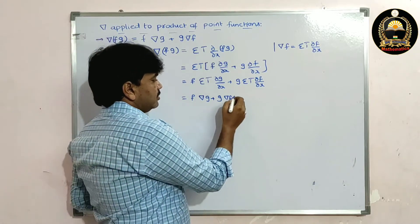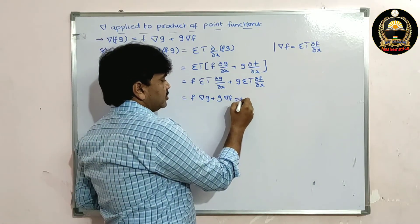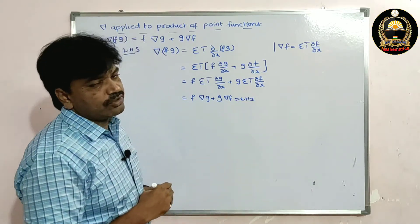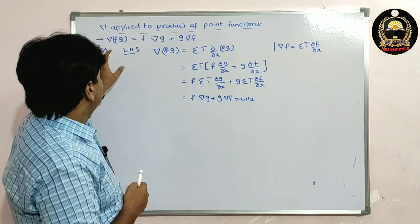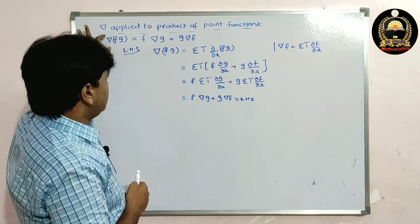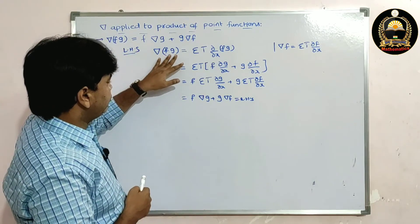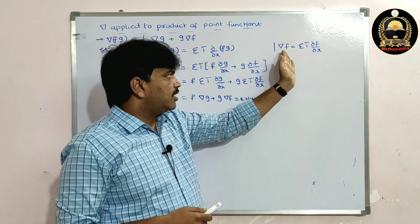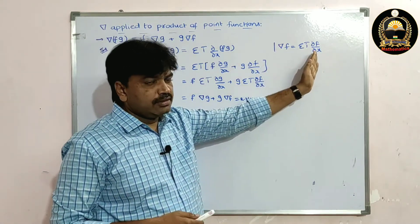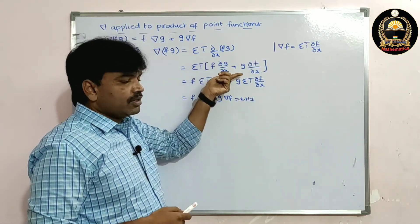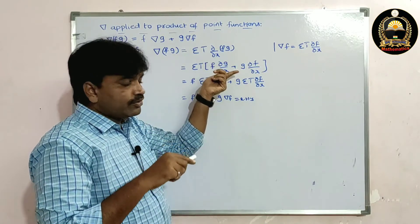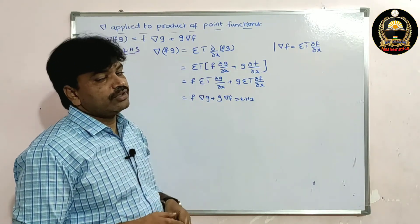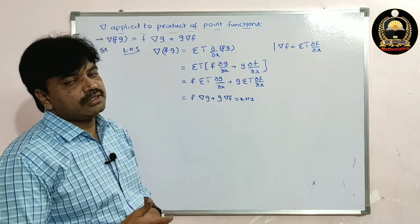This is the RHS. So LHS = RHS. Simply apply the grad f formula to del(fg), apply the properties of derivatives, and we get the RHS. Hence the property is proved.